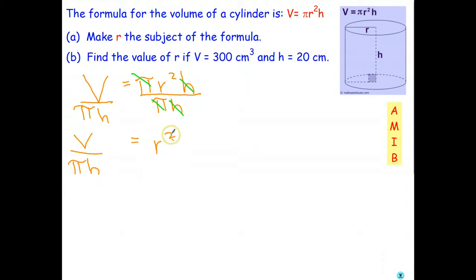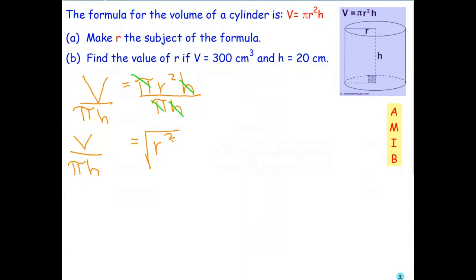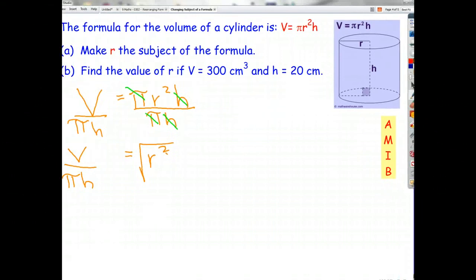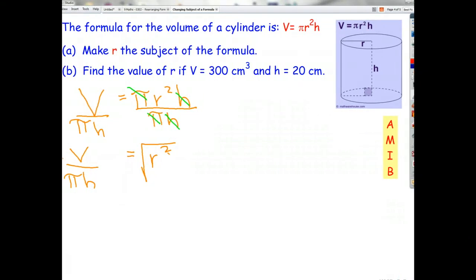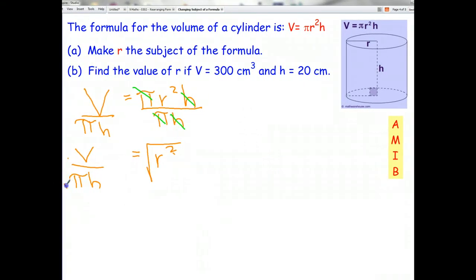And finally, the way we undo squaring is we take the square root. I just got the edge of that. I didn't realize I could change it. We take the square root. Square root and squaring cancel out. And that leaves me with R equals the square root of V over pi H.